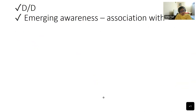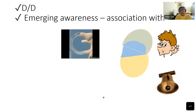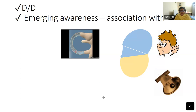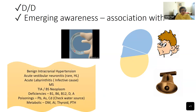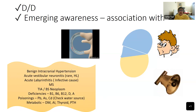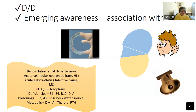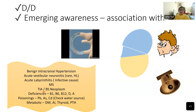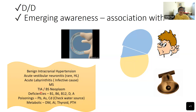Differentials include BPPV and Meniere's disease — any cause of recurrent episodic vertigo should bring these to mind. Other differentials that must always be excluded include TIA. Particularly if you have an elderly patient with photophobia, phonophobia, some headache, and vertigo lasting up to 72 hours, you must try to rule out a TIA and posterior circulation stroke syndrome. We always check for neurological deficits in these patients.